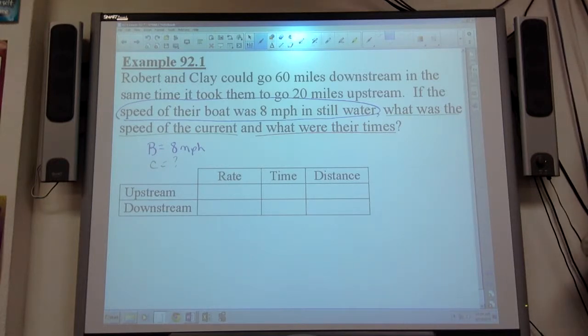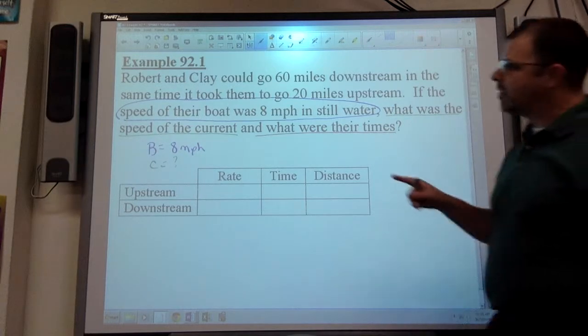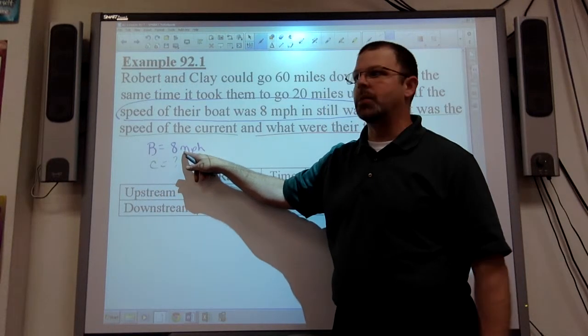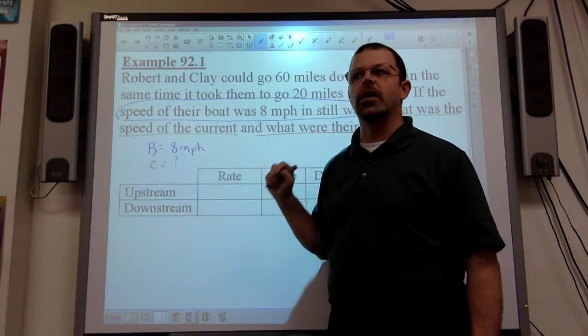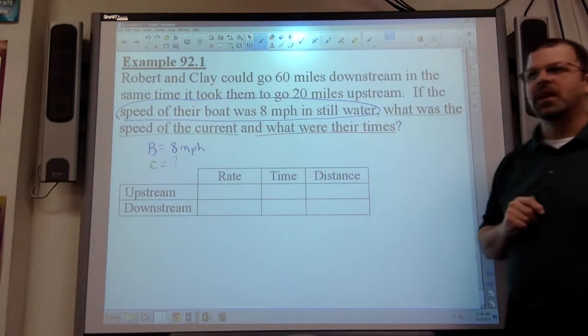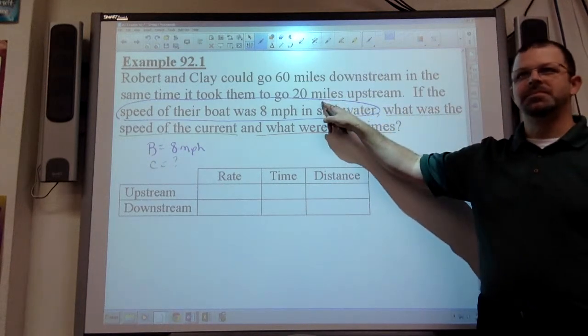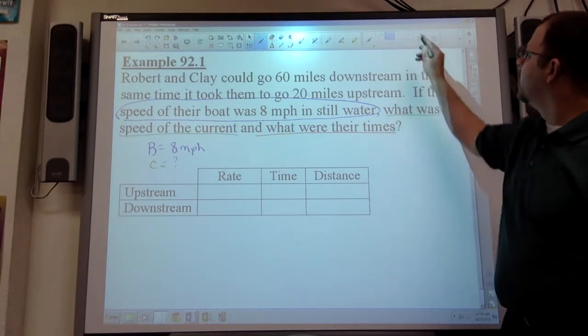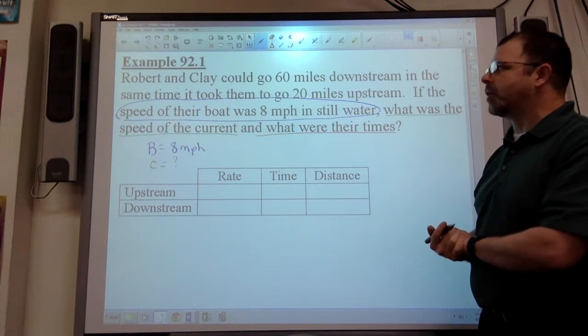So I can see very clearly what the questions are. One of the questions is what's the speed of the current? That's the very first thing I'm supposed to be looking for, right? How fast the boat can go in still water and how fast the current is. So I can see very clearly that the speed of the boat is given to me. Still water, speed of the boat, 8 miles an hour. Speed of the current is unknown.